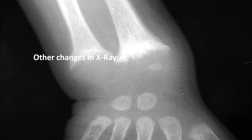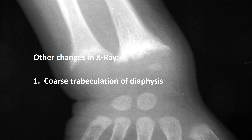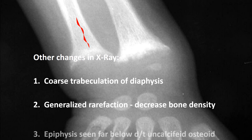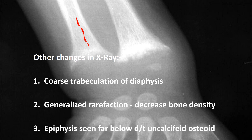Other changes on x-ray in rickets include coarse trabeculation of the diaphysis — you can see the trabeculae are coarse in the diaphysis. Due to decreased bone density, generalized rarefaction occurs. The epiphysis appears far below due to uncalcified osteoid between the metaphysis and epiphysis, as seen in this x-ray.